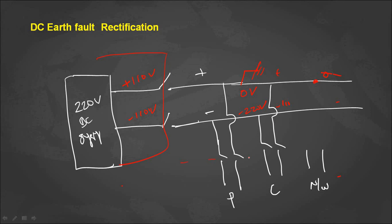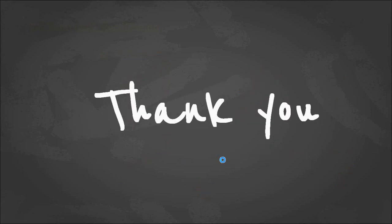If the DC bus bar itself is grounded — for example due to a broken insulator — the positive bus bar voltage becomes 0 volts and the negative bus bar voltage becomes -220 volts. We turn off all MCBs; even after doing so the abnormal voltage remains, confirming the bus bar itself is grounded. We then inspect the bus bar insulators, identify the damaged one, and replace it with a healthy insulator. By this process of sectionalizing, we can identify and rectify the DC earth fault in a DC system.